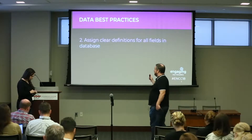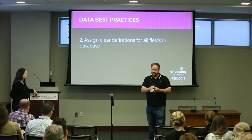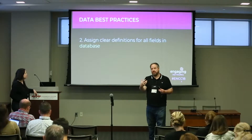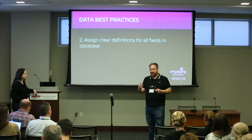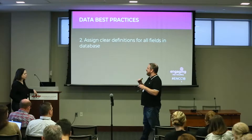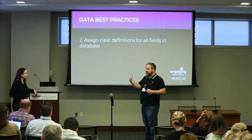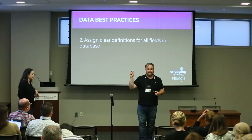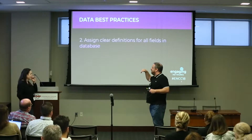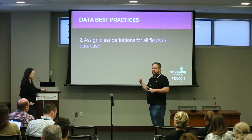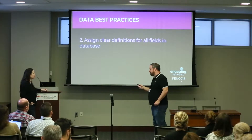Another big one is assigning clear definitions for all fields in the database. We often come across a database where you pause and go: that raised $5 million in 1992 and it's called '496829E,' and nobody has any idea what it was. It's very important to have clear definitions. Most databases are robust enough that you can use common, standard things — like 'direct mail' or 'email' — just use very standard definitions.